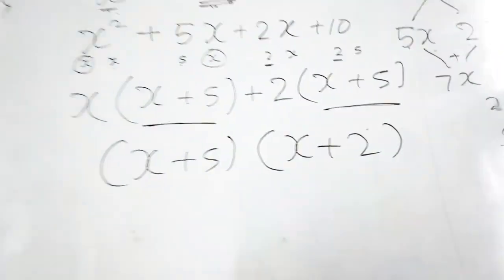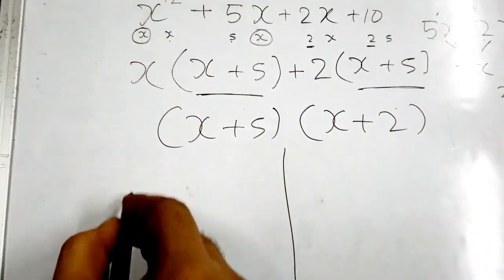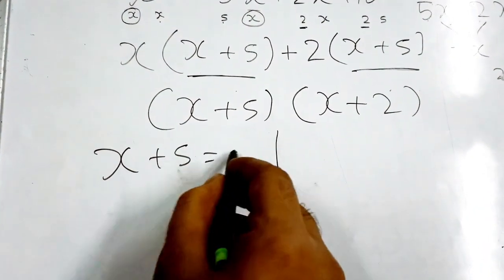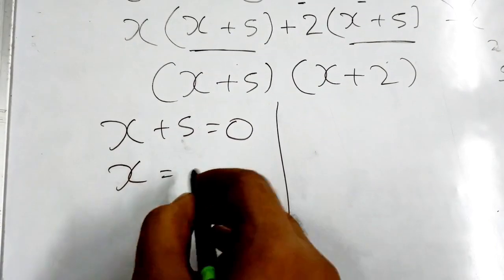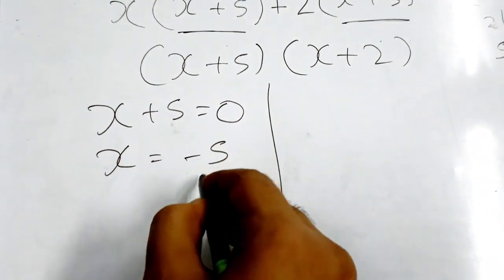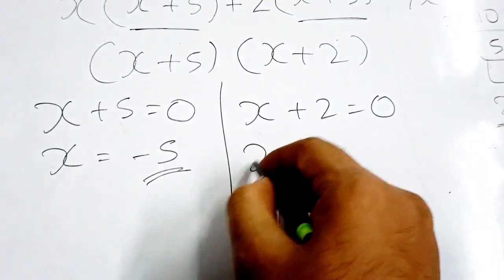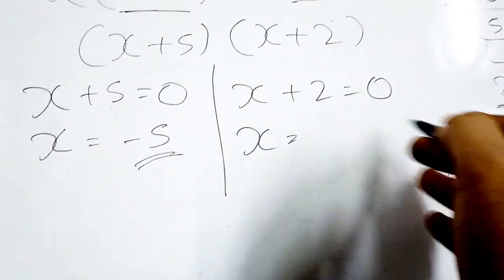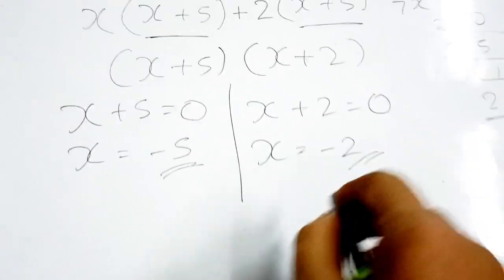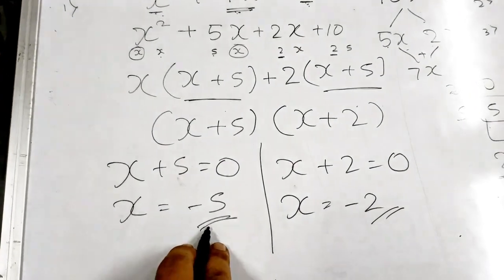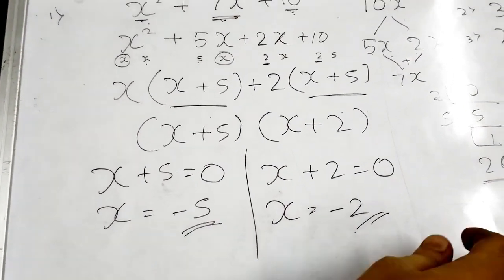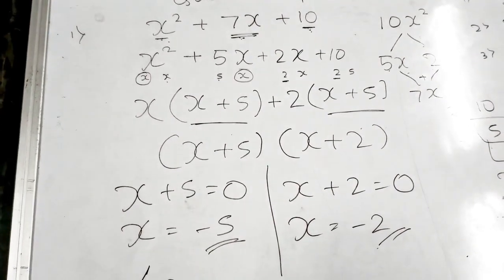Now simplify this. x plus 5 equals 0, so x equals minus 5. Then once again, x plus 2 equals 0, so x equals minus 2. Therefore, the two zeros are minus 5 and minus 2. You can write alpha as minus 5, beta as minus 2. In the next problems we will see how to verify this also.